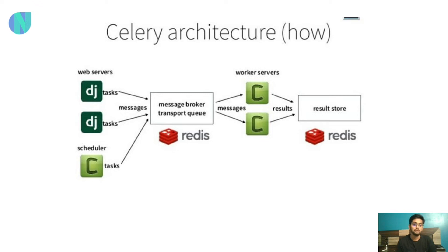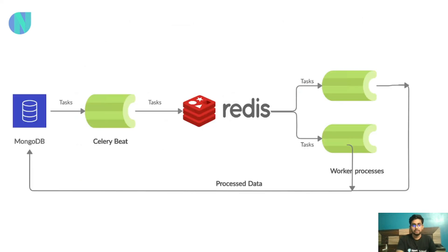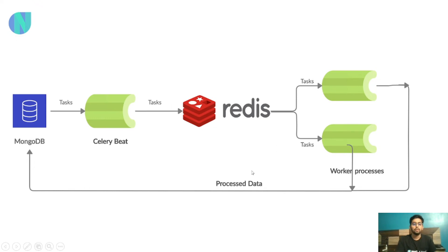Celery is a very important thing if you are making a scalable application. Here in the next image you will understand the architecture better. Here we have MongoDB — a NoSQL database — as part of the setup.